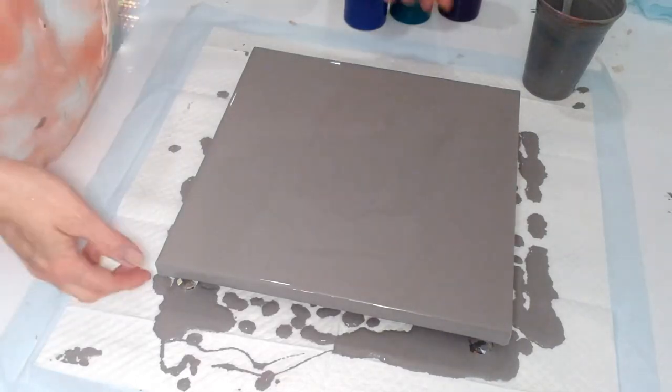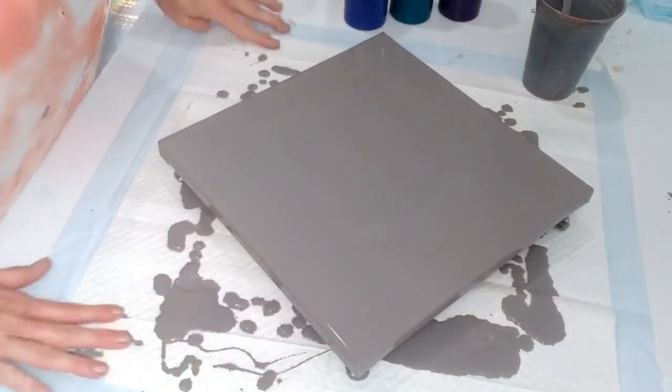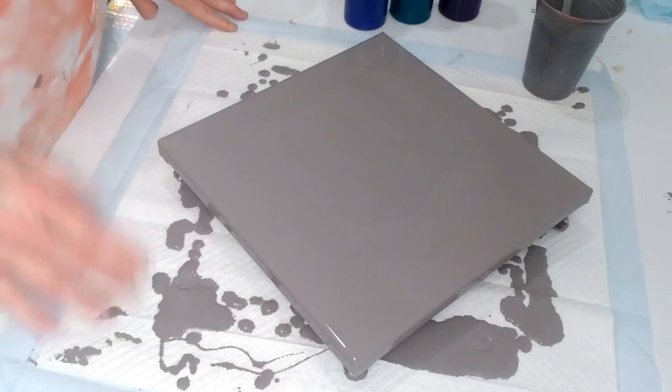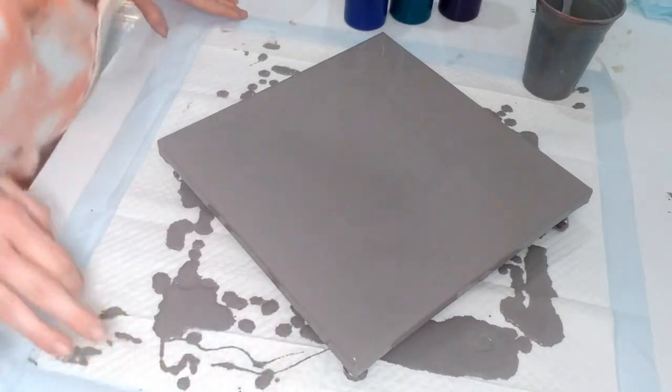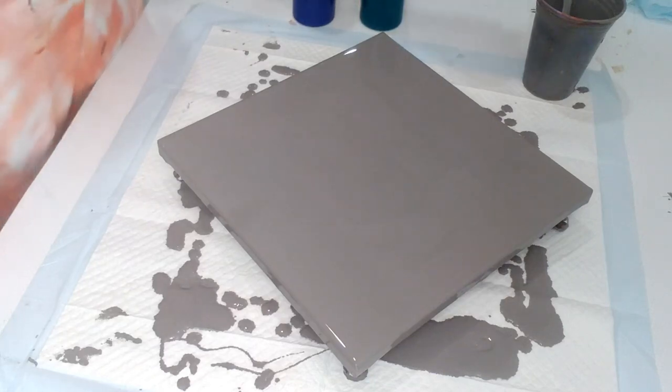All right guys, I think I'm going to do this as a diagonal swipe, so we'll turn the canvas. Are we still in frame? Okay, we are. We're going to start off with a purple.